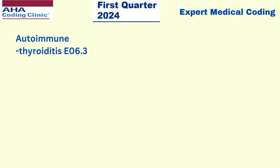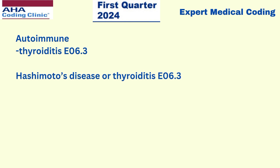If you go to the index and search with the term autoimmune and under the sub-term thyroiditis, it will lead you to code E06.3. And if you go to Hashimoto's disease or thyroiditis as a main term, you will get the same code E06.3.